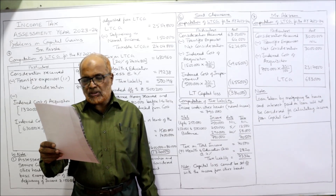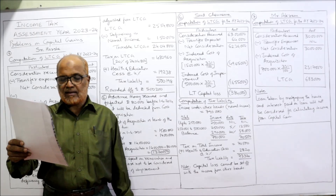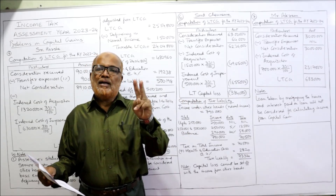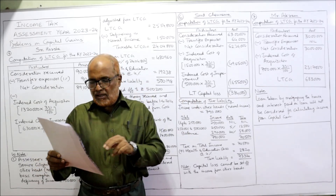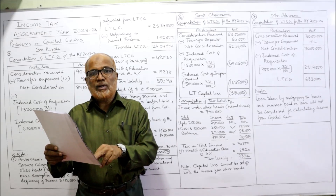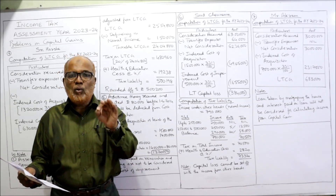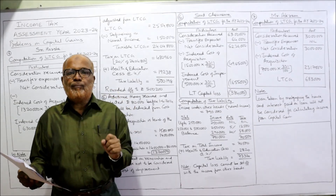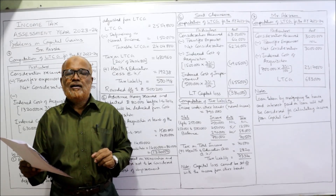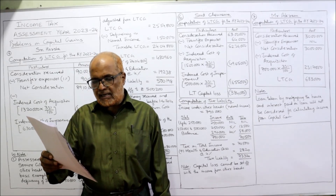Selling expenses are Rs. 64,000. Cost Inflation Index for 2001-2002 is 100. FMV on 1st April 2001 is Rs. 15,00,000. Whenever an asset is purchased before 1st April 2001, we take the higher of actual cost or FMV. Here actual cost was Rs. 5,00,000 but FMV was Rs. 15,00,000. Additionally, stamp duty value is Rs. 16,00,000. Whenever stamp duty value is given, we take the lower of stamp duty value or FMV — whichever is less as cost of acquisition. So we take Rs. 15,00,000 as cost of acquisition.